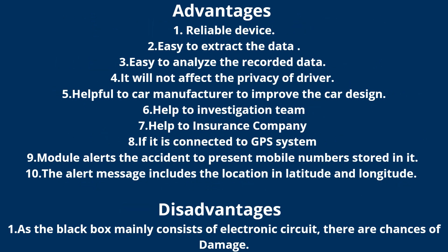Advantages of Car Black Box include: it is a reliable device, easy to extract data, easy to analyze recorded data, it will not affect the privacy of the driver, it is helpful to car manufacturers to improve car design, helps the investigation team, helps the insurance company, and helps to connect the GPS system. It is a module that alerts the accident to a preset mobile number with location in latitude and longitude. The only disadvantage is that it mainly consists of an electronic circuit, so in the event of a crash there may be a chance of damage.